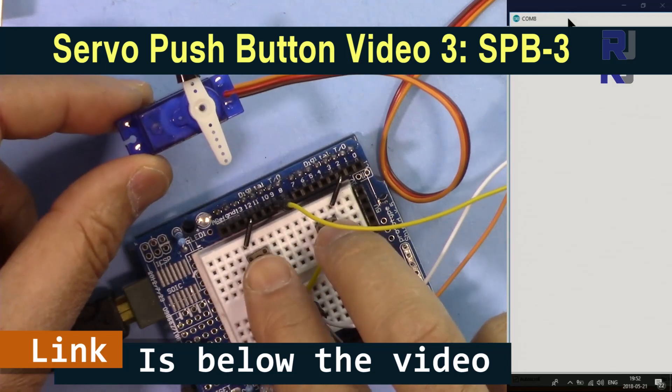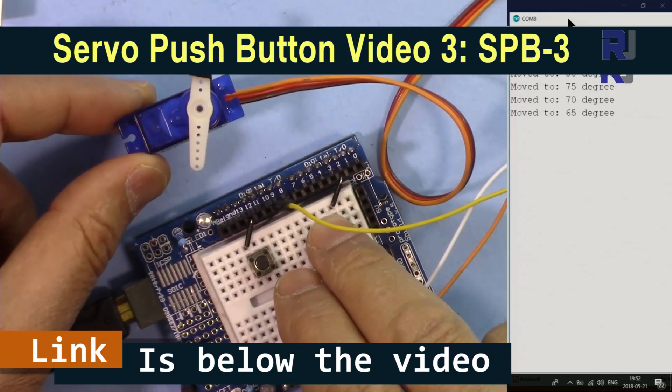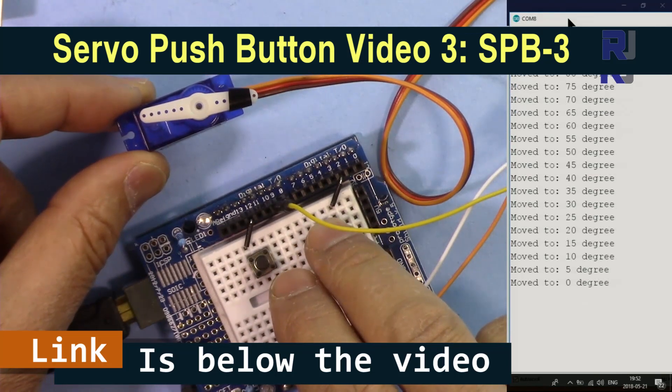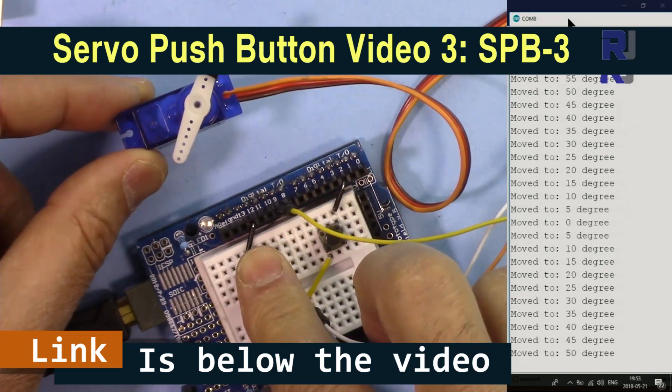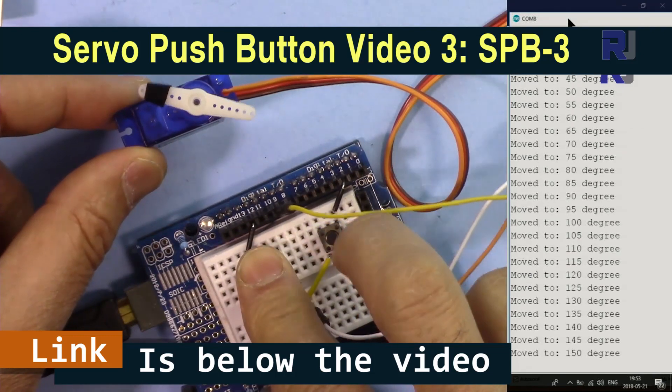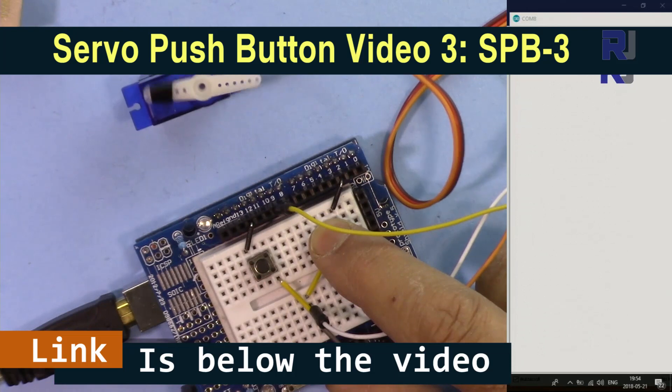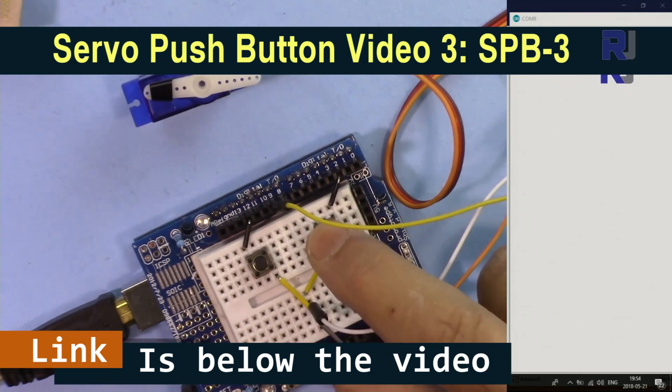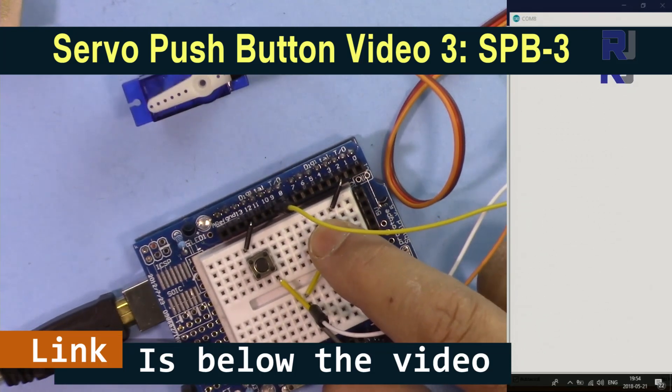Also I have another project that you can control a servo motor using two push buttons. One push button to move the servo motor to the right and the other push button will move the servo motor to the left. When you release a push button, the servo motor will stop.